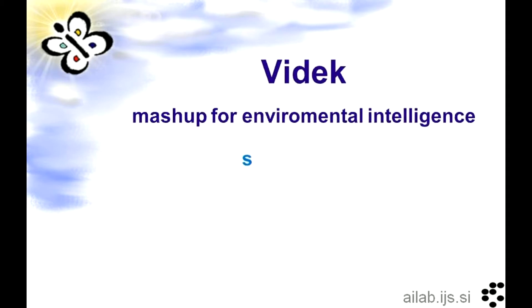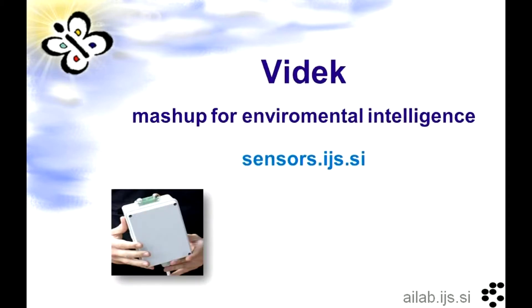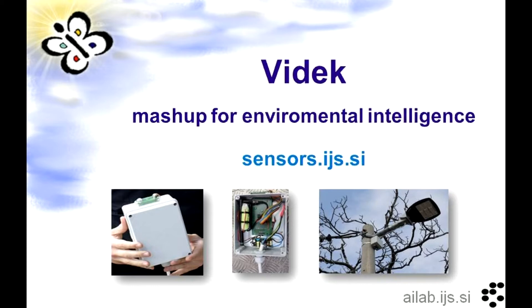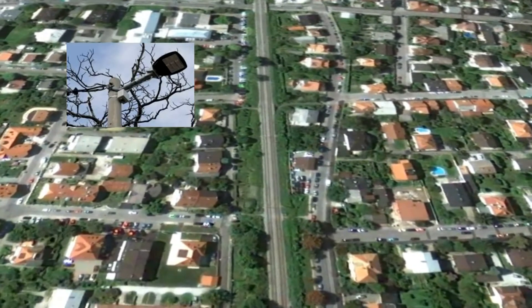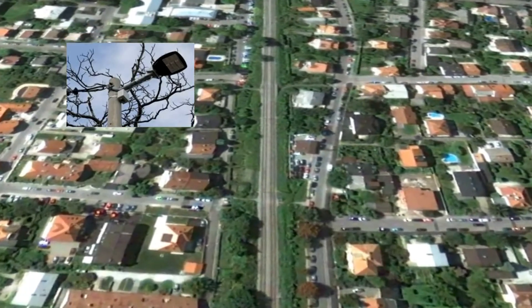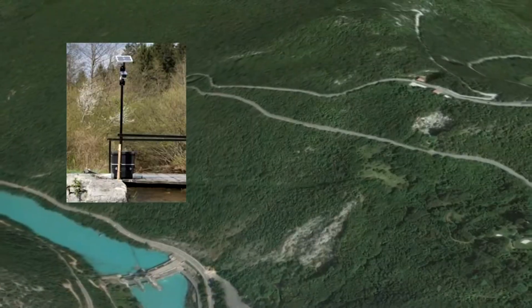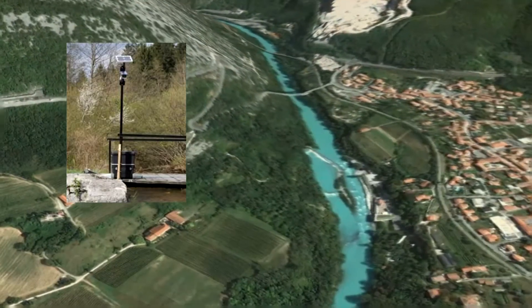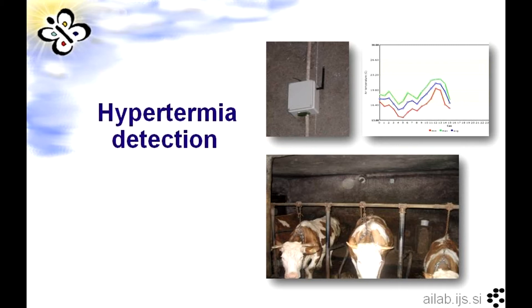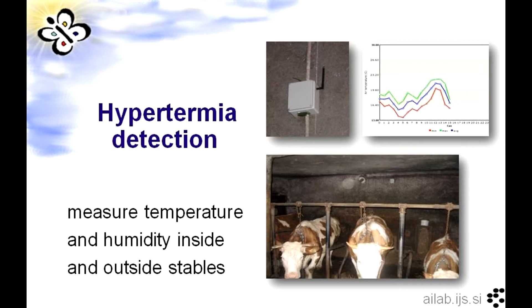VDEC is a mashup based on data from a sensor network which monitors the environment. Sensor nodes on light poles monitor streets and roads, other nodes measure conditions on rivers, some setups also provide data from stables, beehives, and so on.